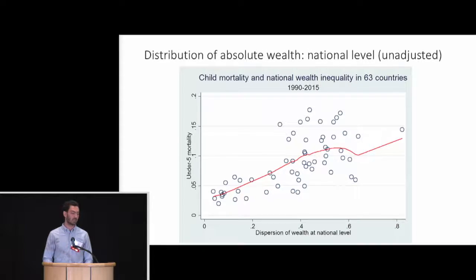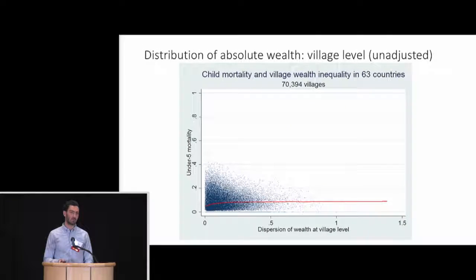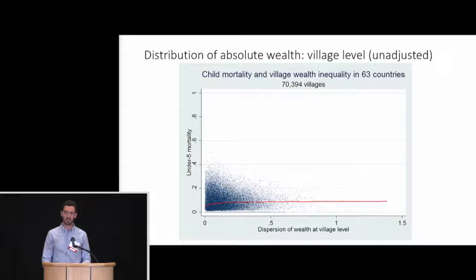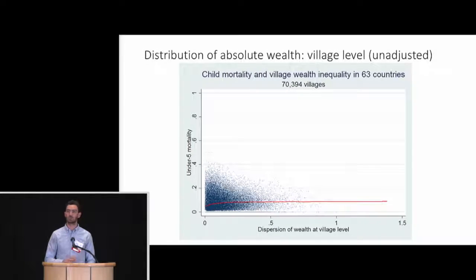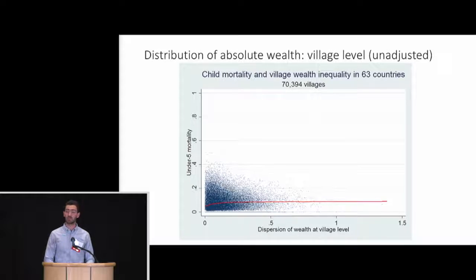This national finding was not particularly surprising. But the village-level result was more surprising. I plotted the same relationship at the level of the DHS cluster or village, and unadjusted, you don't see the same relationship. Across 70,000 villages, you don't really see a hazardous relationship between wealth inequality and child mortality — it just looks fairly neutral. The next and final step is what happens if we use fully adjusted multi-level survival models that take into account wealth in every way I've defined it.